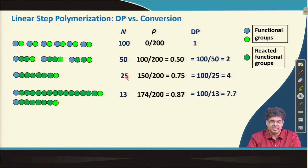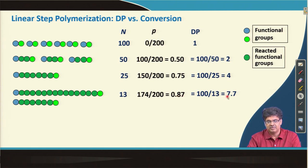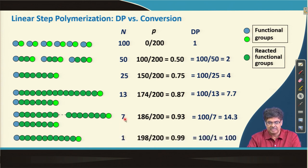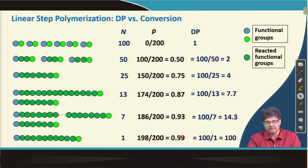Continuing: if 25 molecules react pairwise to give 12 molecules plus 1 remaining (13 total), then 174 of 200 functional groups have reacted, P = 0.87, and degree of polymerization = 100/13 = 7.7. When nearly every molecule has reacted — 198 of 200 functional groups reacted — P = 0.99 and the average degree of polymerization is 100. Note that degree of polymerization = N₀/N, and P is the fraction of functional groups reacted.